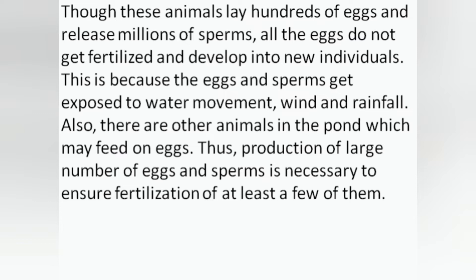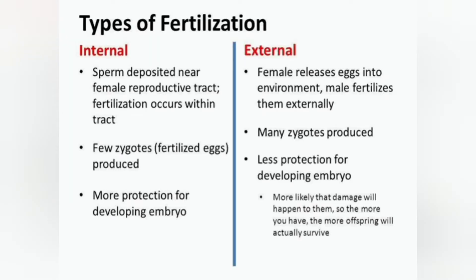Now we will discuss the differences between internal and external fertilization. Internal fertilization means the development of the baby takes place inside the female body. In external fertilization, many zygotes are produced, while in internal fertilization, fewer zygotes are produced. In internal fertilization there is more protection for the developing embryo, whereas in external fertilization there is less protection for the developing embryo.